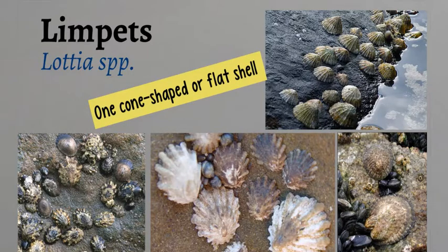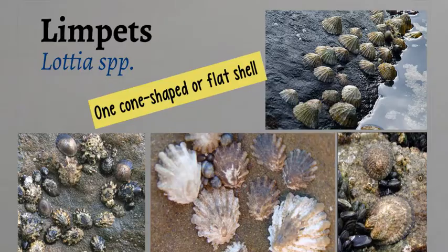Limpets are snail-like mollusks with one shell. The shell is cone-shaped or flat, and they have the profile of that of a mountain. Their shells can be different sizes, colors, and different textures, like smooth or ribbed. You can find them usually in the mid to high zone areas of the rocky intertidal.